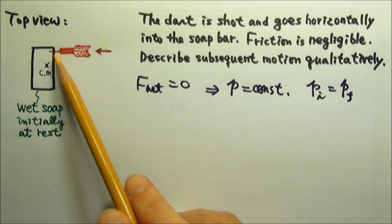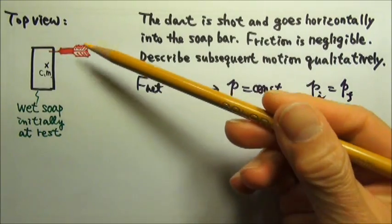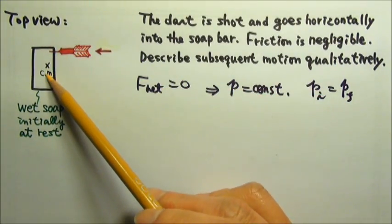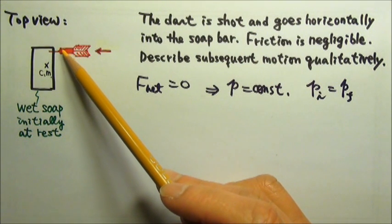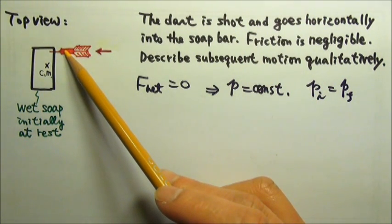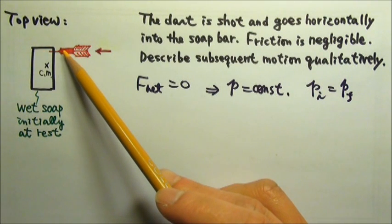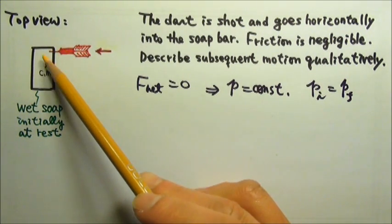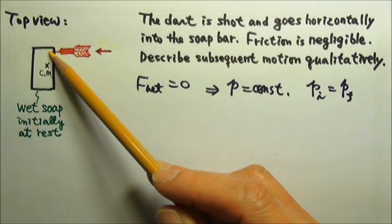In this case, the net torque is also zero because there is no friction. They are on a horizontal surface, and during the collision, the dart exerts a force on the soap bar. The soap bar exerts an equal and opposite force on the dart, and these two forces are equal and opposite.